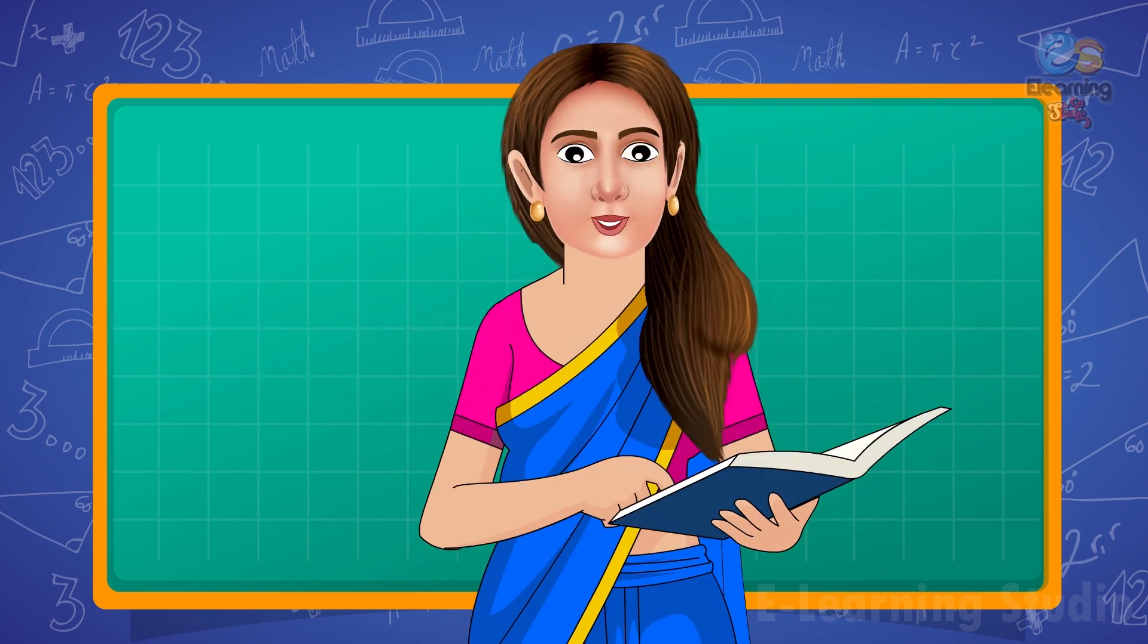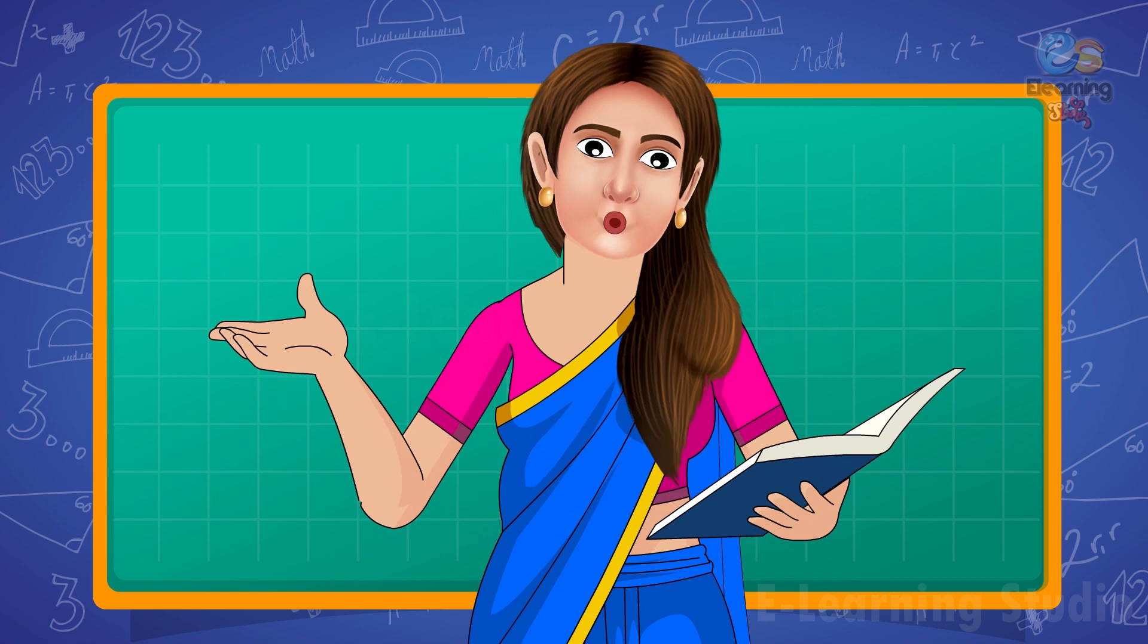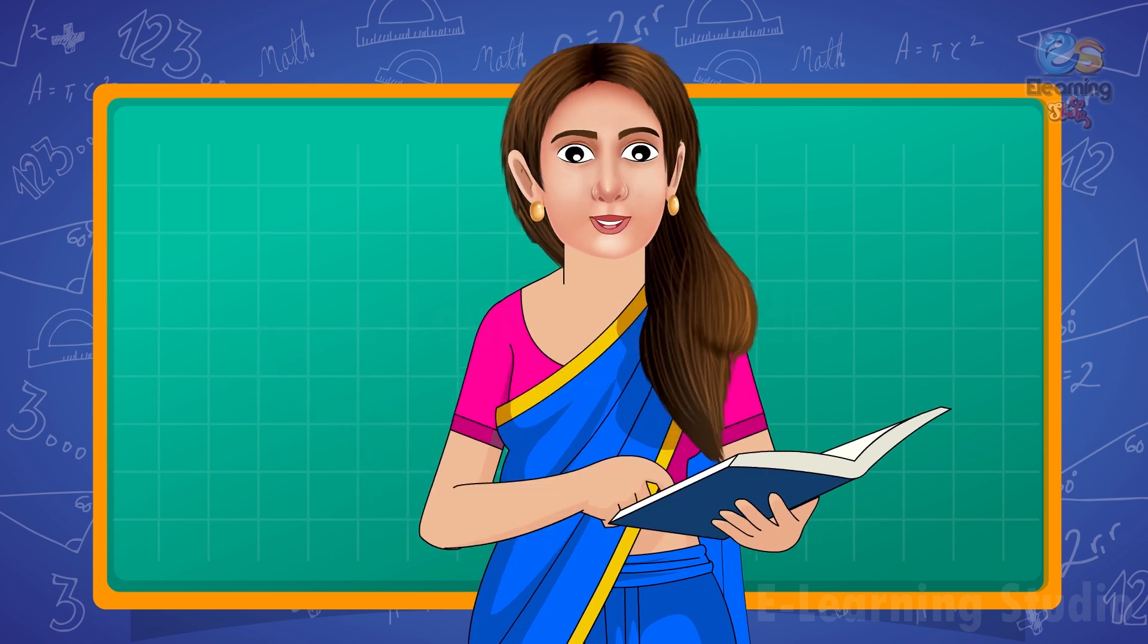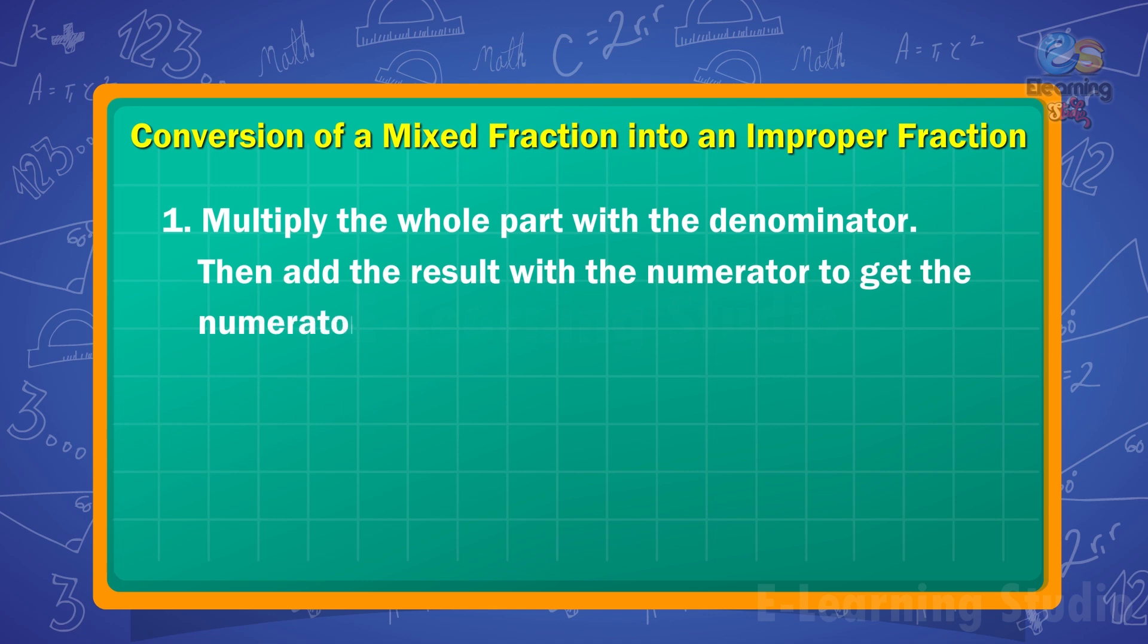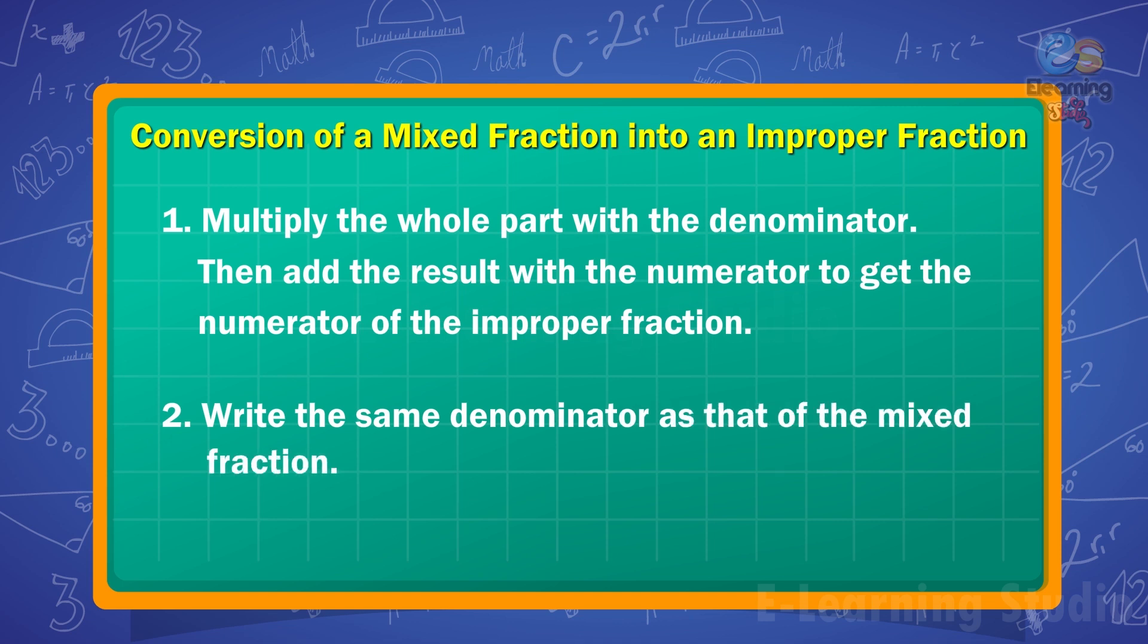Children, while converting a mixed fraction to an improper fraction, multiply the whole part with the denominator. Then add the result with the numerator to get the numerator of the improper fraction, and write the same denominator as that of the mixed fraction.